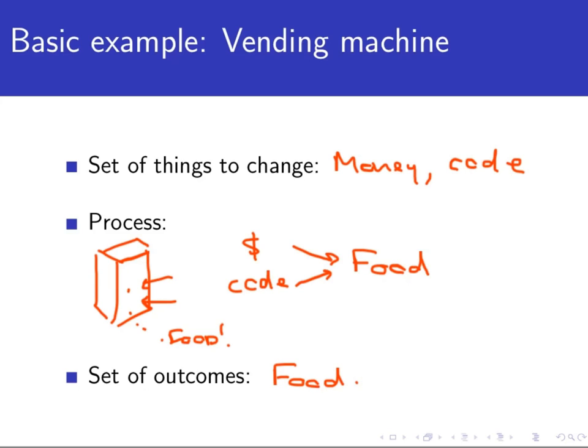So notice that the vending machine has these two important properties as well. Any valid combination of money and vending machine codes will, if the machine is working properly, return something. And secondly, if I put in a valid amount of money and a code into the machine, then the outcome is unique. As much as I would like to be otherwise, only one food item is going to drop out if I give it a certain amount of money and a code that's valid.